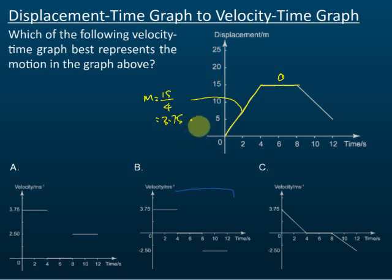And then for the last four seconds, the gradient is equal to negative 10 over 4, negative 10 over 4, which equals negative 2.5 meters per second.